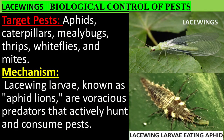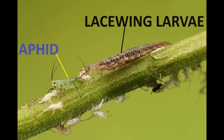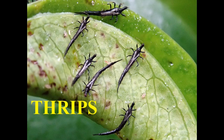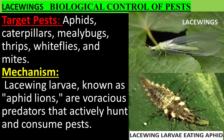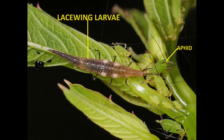Lacewings: target pests include aphids, caterpillars, mealybugs, thrips, whiteflies, and mites. Lacewing larvae, known as aphid lions, are voracious predators that actively hunt and consume pests.